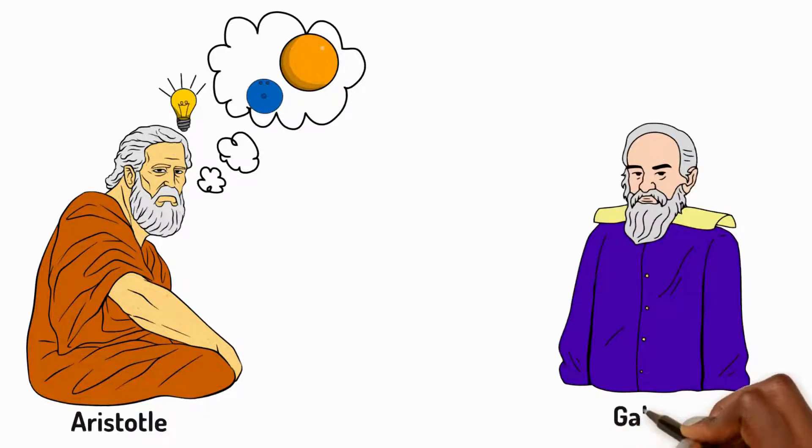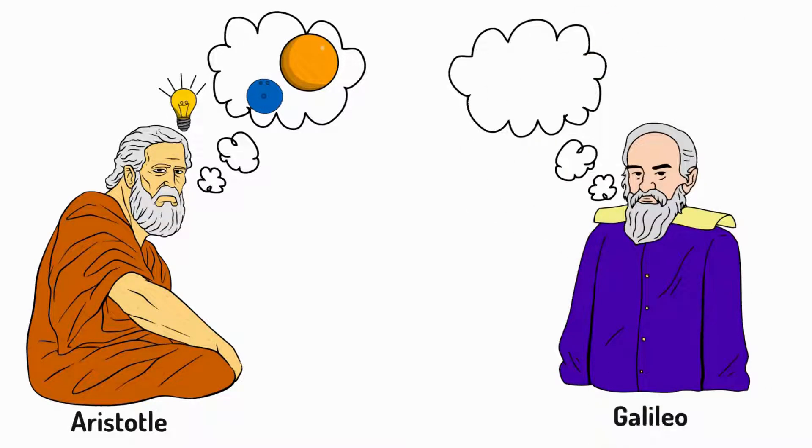Then along came the Italian scientist Galileo centuries later. He proved Aristotle wrong. He suggested that gravity affects all objects equally. Galileo carried out hands-on investigations to drop heavy and light balls at the same time.